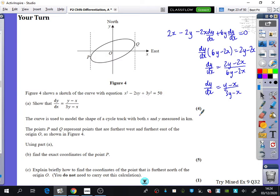It then says the curve is used to model the shape of a cycle track with both x and y measured in kilometers. I don't know why they even tell you it's a cycle track, it doesn't get used at any point in the question. The points P and Q represent points that are furthest west and furthest east of the origin as shown in the figure. So P is over here, Q is over here. Using part A, find the exact coordinates of the point P.